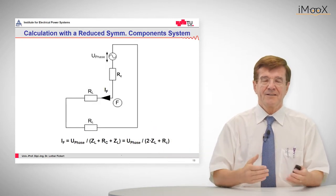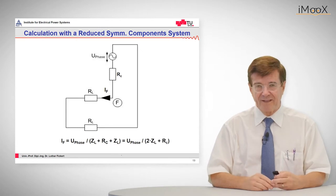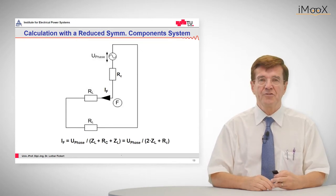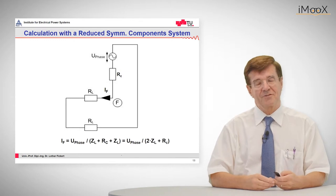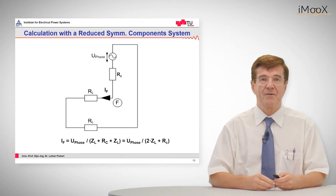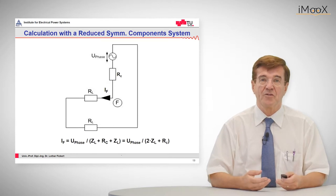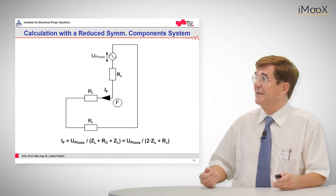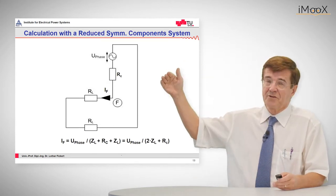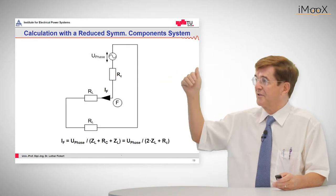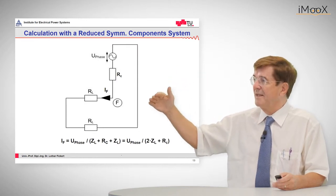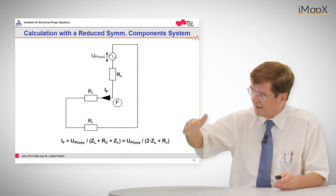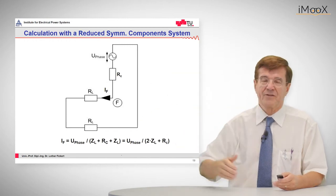This known circuit is now redrawn to make it more compatible with the system of symmetrical components, given here in a reduced form. The outcome of course is the same. This circuit consists of the phase voltage as the driving force, the arc resistance or fault resistance, and the lead going forth and back.